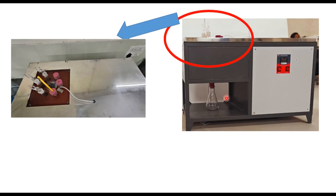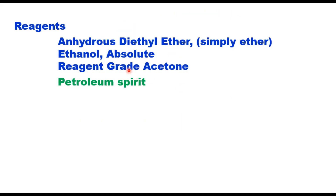You also need a funnel of size 70 mm diameter and 250 mm long. The following reagents are also required: anhydrous diethyl ether (referred to simply as ether), ethanol, acetone, and petroleum spirit.